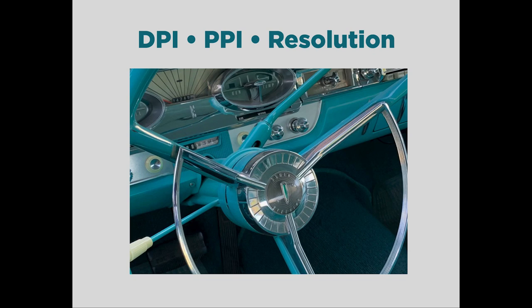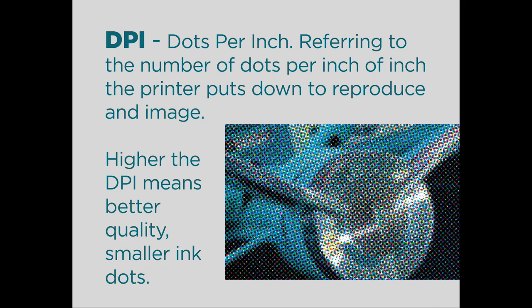Now let's talk about resolution — DPI, PPI, and image resolution. DPI stands for the number of dots per inch, referring to the number of dots per inch that come out of the printer, putting down ink to reproduce your image. A higher number of dots per inch means smaller ink dots, which produces a better quality outcome because finer dots can generally create a nicer looking image. This image here is quite an exaggeration of dots per inch, created using the halftone effect, which takes your cyan, magenta, yellow, and black and creates dots so you can reproduce the image. Remember, the higher the dots per inch, the better quality you get.